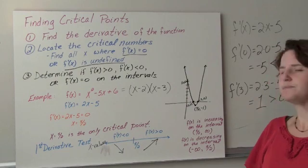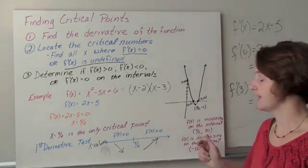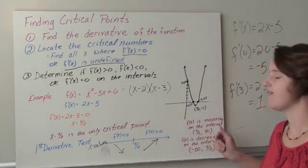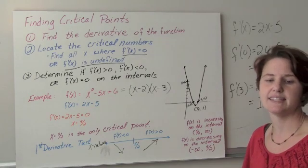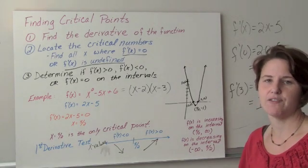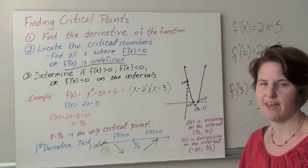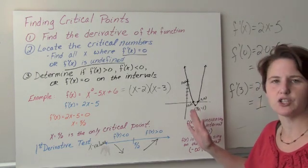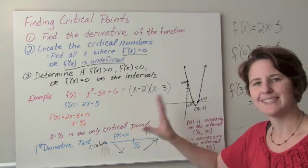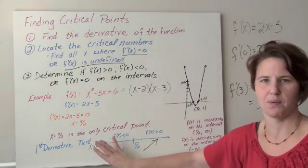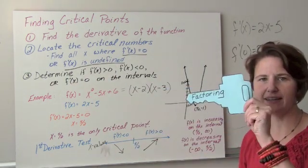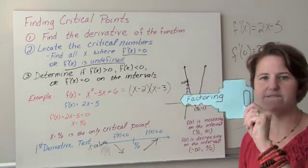So f of x is increasing on the interval from 5/2 to infinity, and it's decreasing on the interval from negative infinity to 5/2. We saw that from the picture, but what I'm going to ask you to do on homework and tests is this work right here. And remember, our key is factoring.